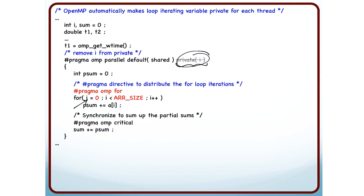So I don't need to declare i to be private, I don't need to scope it. OpenMP automatically ensures that if I have a hash pragma omp for, then the variable for that for loop is automatically made to be private. It has to because each thread will be executing its own set of iterations.